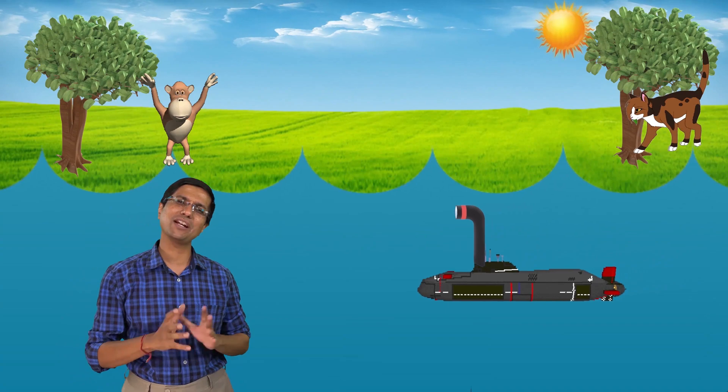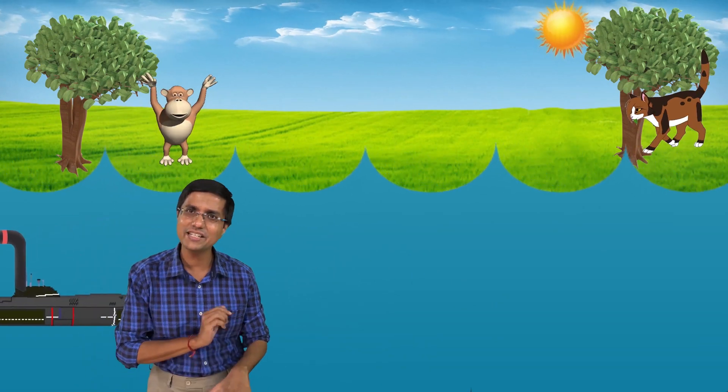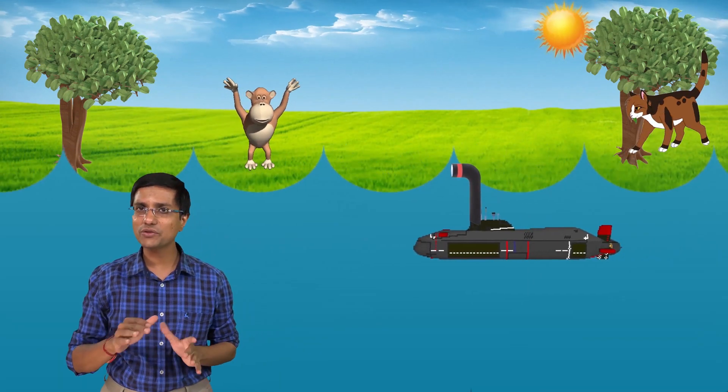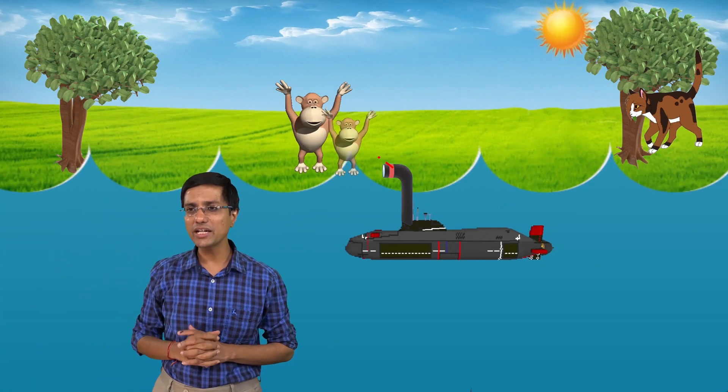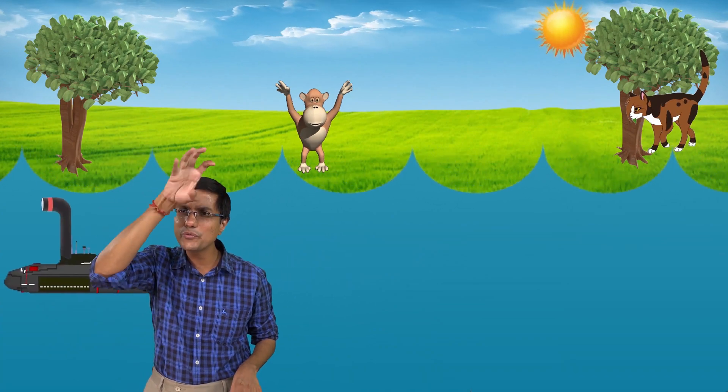This periscope has several applications. One of the applications is in submarines. In submarines, they travel inside the water and want to see things which are above on the surface of the water. The periscope allows them to see outside the water while still being inside. They are completely hidden, except for this little tube which peeks out.